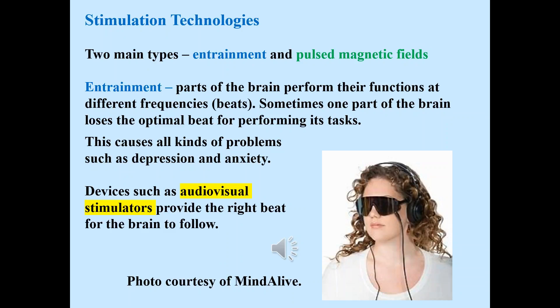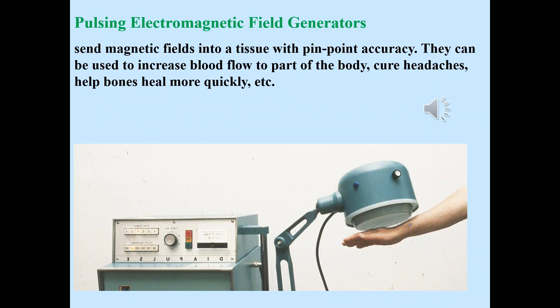Stimulation technologies. There are two main types: entrainment and pulsed electromagnetic fields. Parts of the brain perform their functions at different frequencies, and sometimes one part loses the optimal beat for performing its tasks, causing problems such as depression and anxiety. Devices such as audiovisual stimulators provide the right beat for the brain to follow. Pulsed electromagnetic field generators send magnetic fields into tissue with pinpoint accuracy and can be used to increase blood flow, cure headaches, help bones heal more quickly, and numerous other applications.